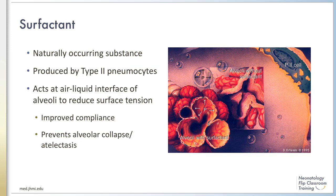Surfactant is a naturally occurring chemical produced by type 2 pneumocytes, which operates at the air-liquid interface in the alveoli to decrease surface tension. The center of the image on this slide demonstrates a collapsed alveolus in the absence of surfactant, with resultant elevation in surface tension leading to atelectasis.